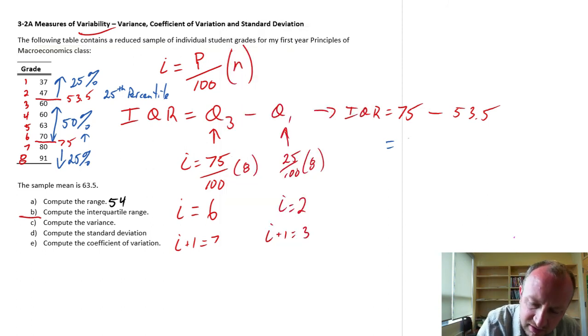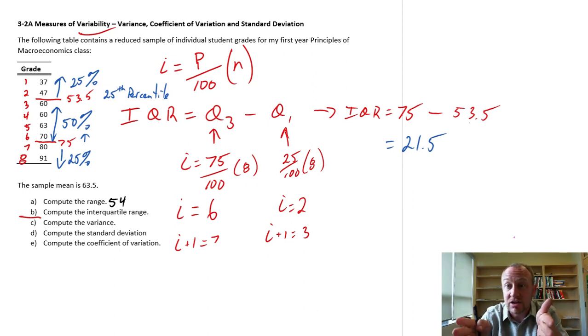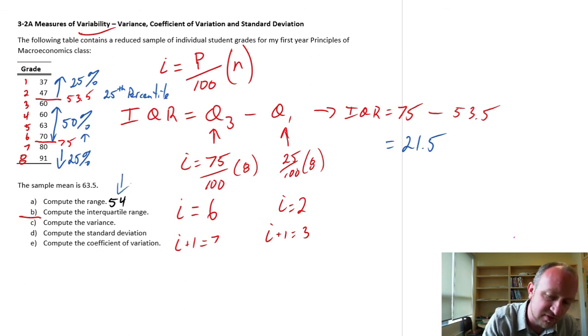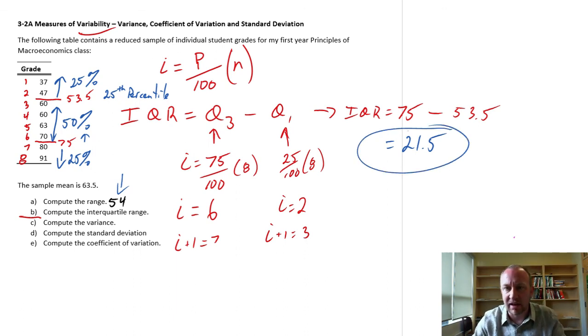So this difference here, 21.5, that tells me really the range, we call it the interquartile range, between the first and the third quartile. So that's the range of the middle 50% of my data. So here we've gone through, we've got the range, so the full spread from smallest to largest value of our data set. We calculated that as 54. And now we have our interquartile range, which is just the range of the middle 50% of the data.